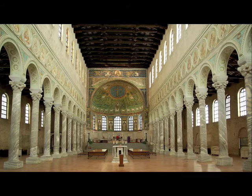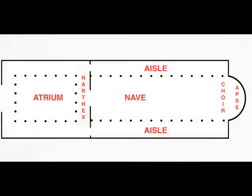A semicircular apse projects from one of the shorter sides. A small area between the nave and apse is reserved for the altar — this area is called a choir or chancel, and it can be separated from the nave by a screen. The apse is almost always at the east, with the entrance at the west. These characteristics are also found in a typical Romanesque pilgrimage church.